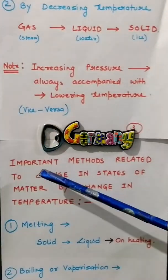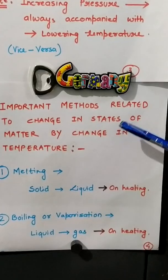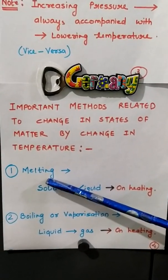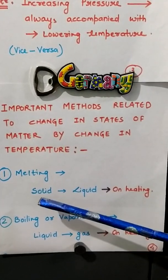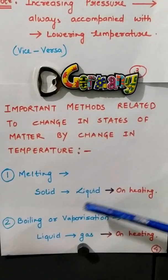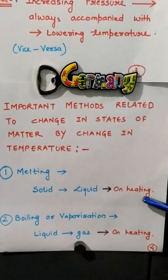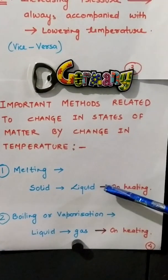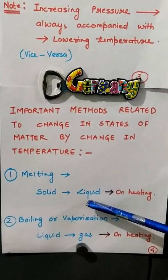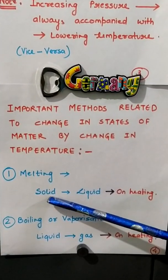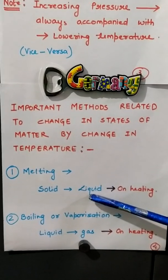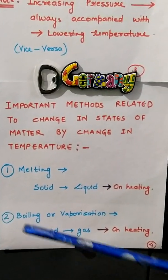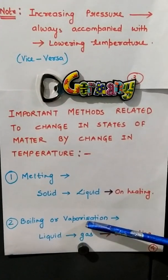Related to the change in temperature, we have some important methods to change the state of matter. The first method is melting, which is the conversion of solid to liquid state, and this is done by heating. For example, ice can be melted into liquid when taken out of the freezer and kept at normal room temperature, where it is given heat and gets converted into liquid state.